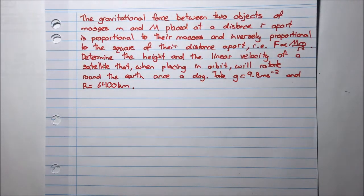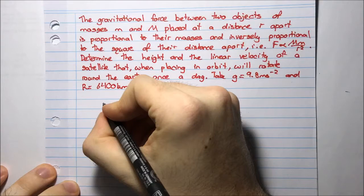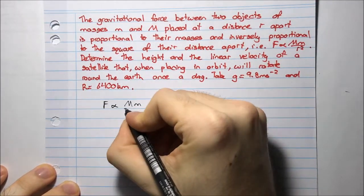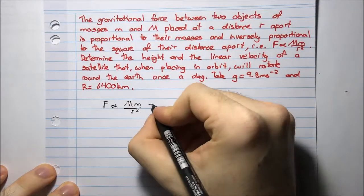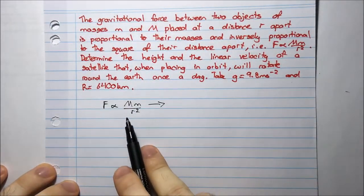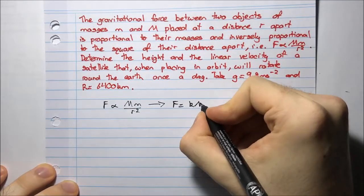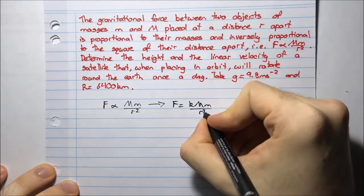So I'm told that f is proportional to capital M little m divided by r squared. To make a proportionality into an equality, I multiply by a constant, k m m divided by r squared.